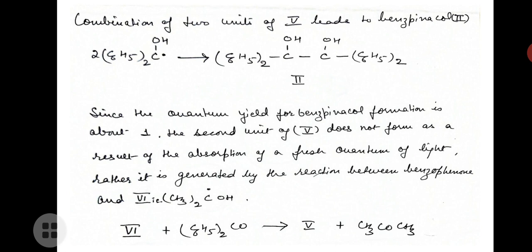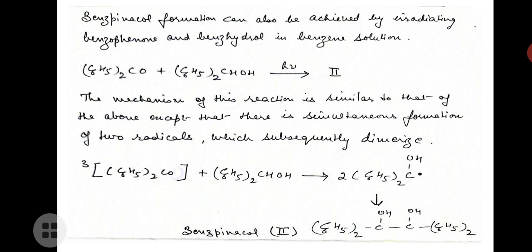Rather, the second benzophenone ketyl is generated by the reaction between benzophenone and the sixth species, acetone ketyl. Benzpinacol formation can also be achieved by irradiating benzophenone and benzohydrol in benzene solution.